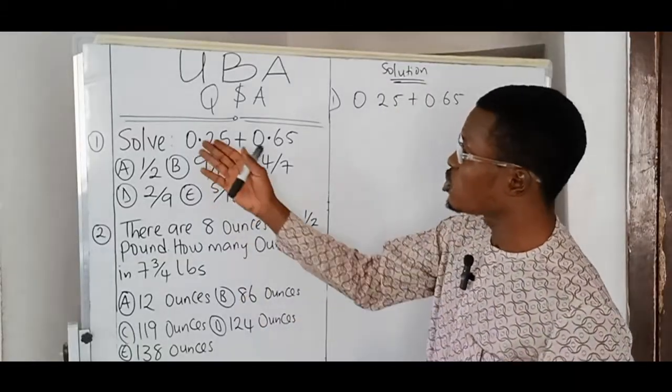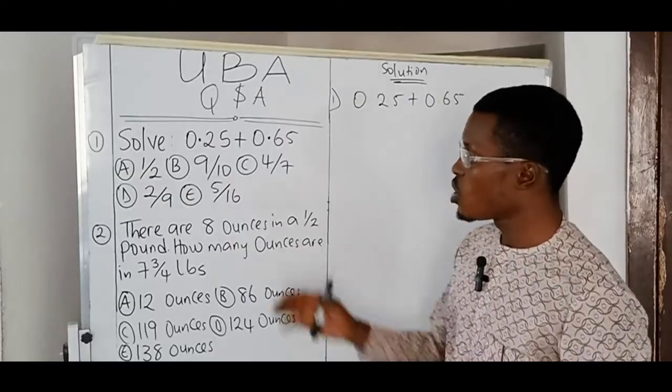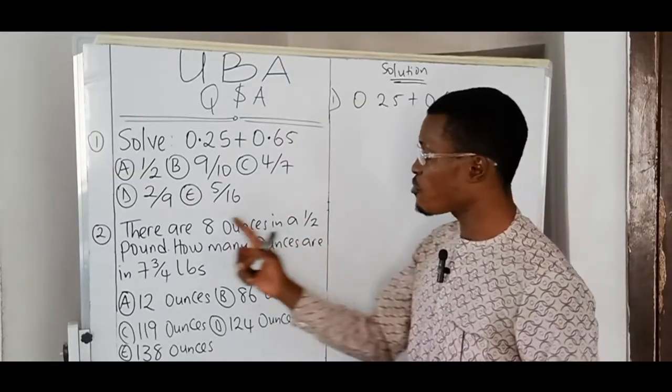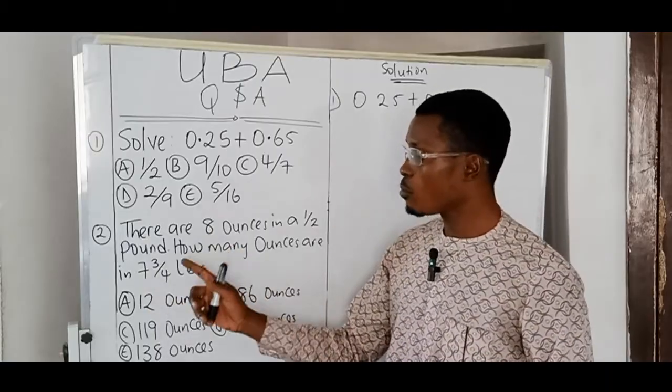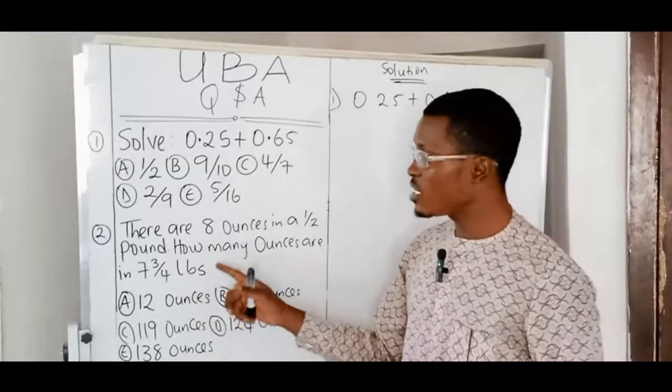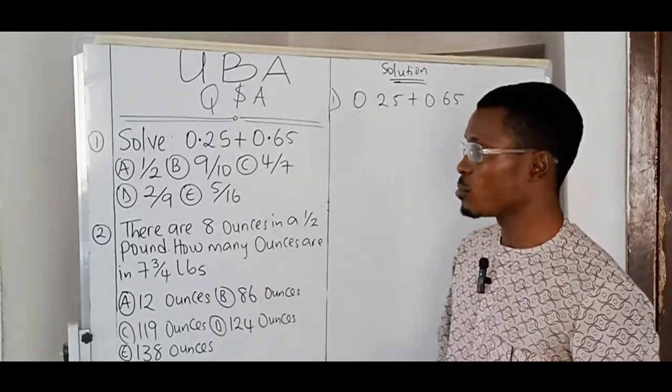Question number one. Solve this sum. The options are given on the board. For number two, there are eight ounces in a half pound. How many ounces are there in 7¾ LBS. LBS here stands for pound. You have the options on the board.